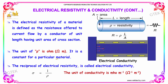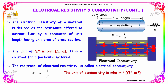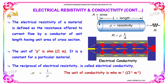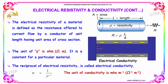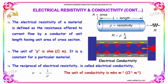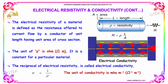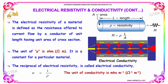The reciprocal of electrical resistivity is called electrical conductivity, and it's indicated by sigma, where sigma is equal to 1 divided by rho. The unit of conductivity is mho per meter — it's the inverse of ohm meter.